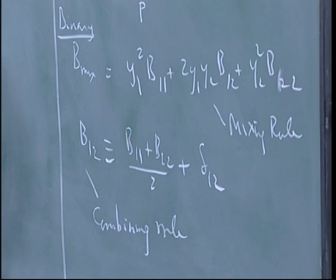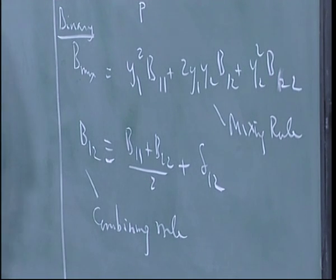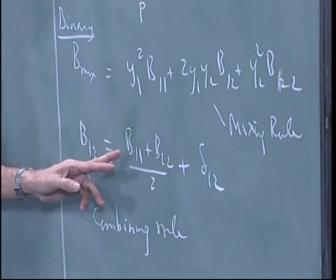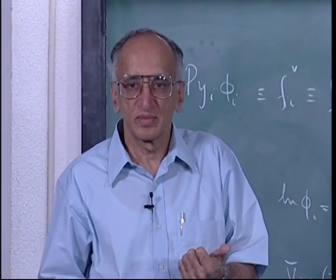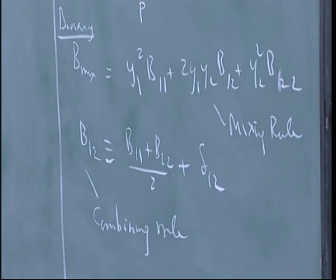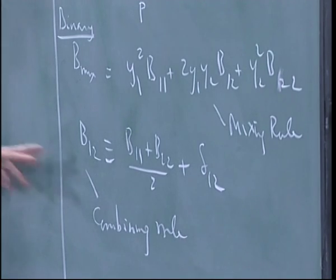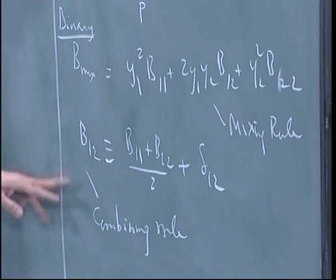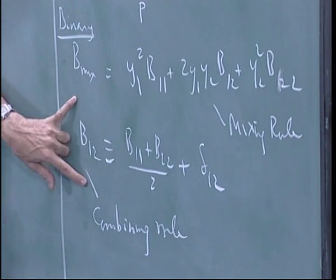When you use the empirical route through the equation of state, you have a B-mix for which, if the equation of state is derived from molecular theory, you can get an exact mixing rule. Otherwise the mixing rule is also empirical. The combining rule is always empirical except in limiting cases. For example, B12 equal to (B11 + B22)/2 is a limiting case valid for similar compounds like methane-ethane or ethane-propane, where delta-12 equals 0. For hard spheres, sigma-12 = (sigma-11 + sigma-22)/2 is exact, but not for real molecules. Only in limiting cases are some of these rules exact.